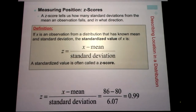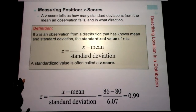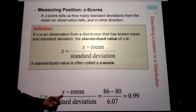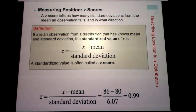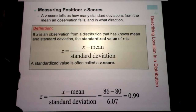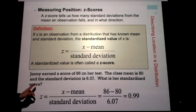Here's an example using the test scores — someone scored an 86. We put 86 in for x, calculate the mean which is 80, and the standard deviation is 6.07. How do we get 0.99? 86 minus 80 is 6, take 6 divided by 6.07, which equals 0.99. We don't make these into percents — that doesn't mean they're in the 99th percentile. It means they're almost one standard deviation above the mean. Jenny earned a score of 86: x = 86, mean = 80, standard deviation = 6.07, z-score = 0.99.